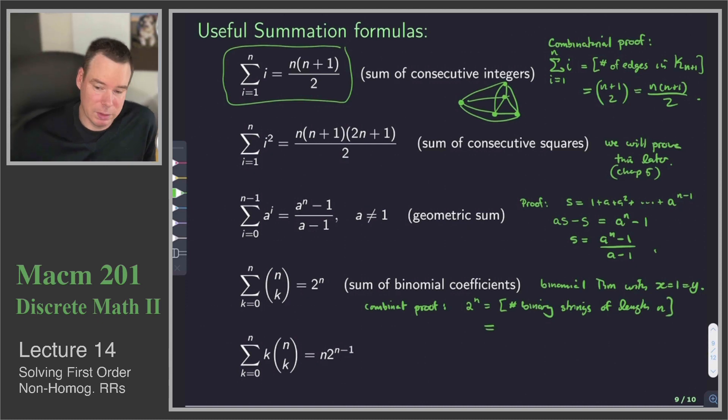But we can count binary strings of length n as follows. How many binary strings are there with 0 ones? There's n choose 0 of those. How many have 1 one? There's n choose 1 of those. How many have 2 ones? n choose 2. All the way up to how many have n ones? n choose n.